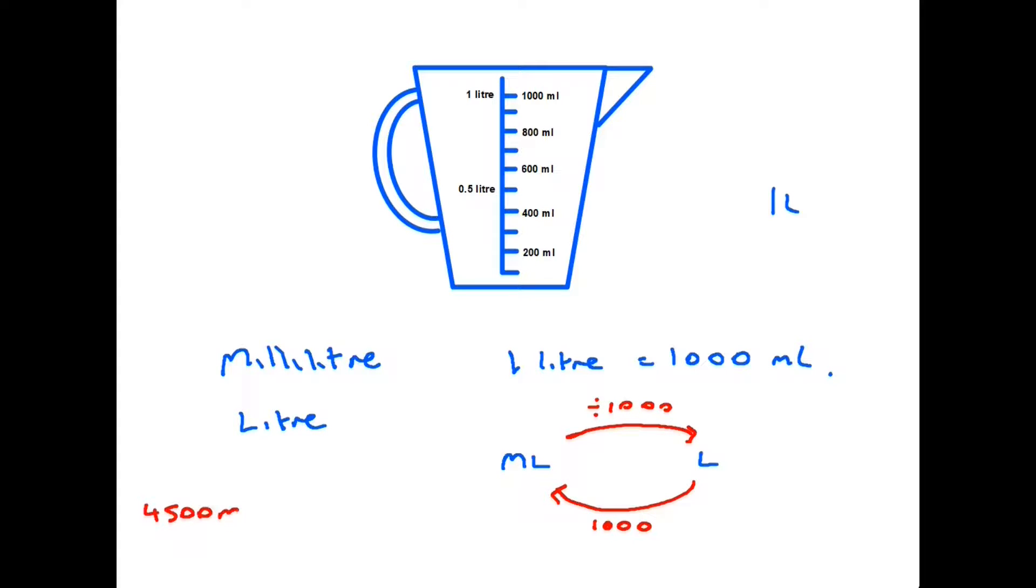For instance, four thousand five hundred milliliters, if we divide that by a thousand, we get four point five liters. And of course when we're going the opposite way around from liters down to milliliters, we therefore multiply by a thousand.